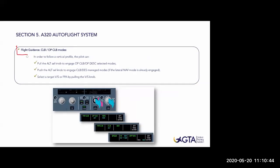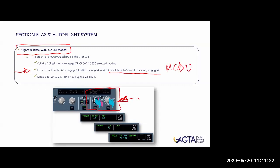We have different modes for climb or descent. You see these blue or magenta arrows - they represent whether it's managed or selected guidance. On the vertical speed knob there is only one blue arrow, meaning no managed mode exists there, as discussed before. For the altitude, we have open climb or managed climb. If I push, it's the managed mode - climb or descent based on MCDU settings like economic climb or economic descent. The aircraft will adjust the speed and flight path to follow this economic speed, while the autothrust remains in thrust mode, climbing with maximum or minimum power available.